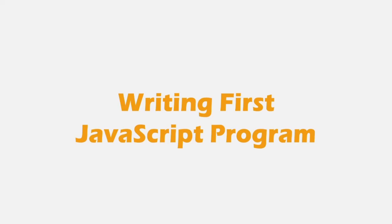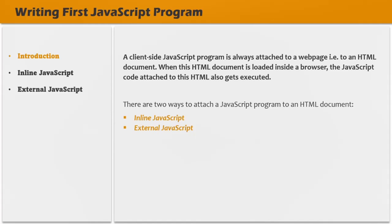Whenever we start learning a new programming language, the first program we write is always a hello world program, and we are going to do the same here. In this lecture, you will write your first JavaScript program. A client-side JavaScript program is always attached to a webpage, that is to an HTML document. When the HTML document is loaded and rendered in the browser, the JavaScript code attached to it also gets executed. There are two ways to attach a JavaScript program to an HTML document: using inline JavaScript and using external JavaScript.